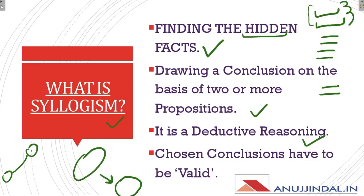You have to draw some facts from the statements and reach some specific things in the conclusion. Fourthly, the chosen conclusions have to be valid. So this is all about what syllogism is.